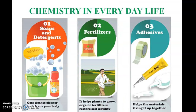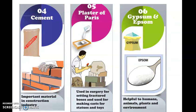Chemistry in everyday life: soap and detergent gets clothes cleaner and cleans your body. Second, fertilizer — it helps plants to grow and organic fertilizer restores soil fertility. Adhesive helps materials fix together. Cement is an important material in the construction industry. Plaster of Paris is used in surgery for setting fractured bones and for making casts for statues and toys.